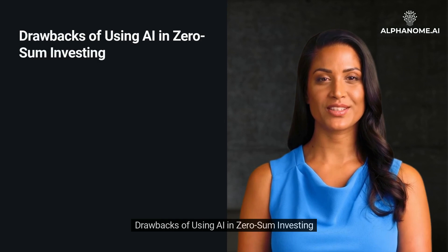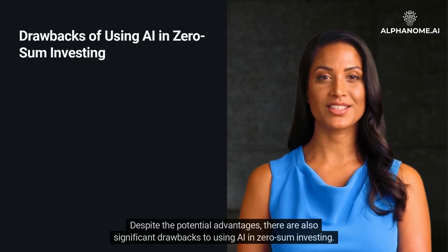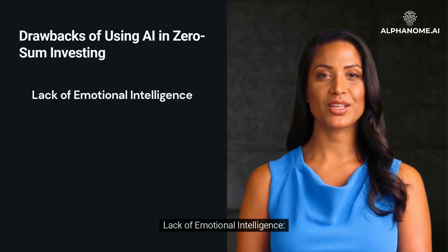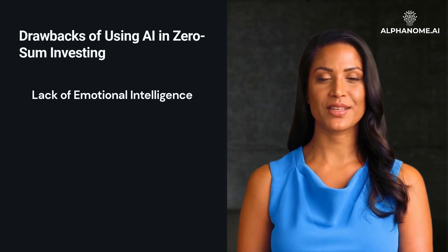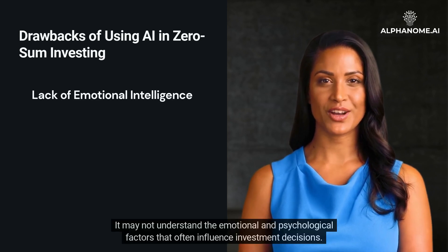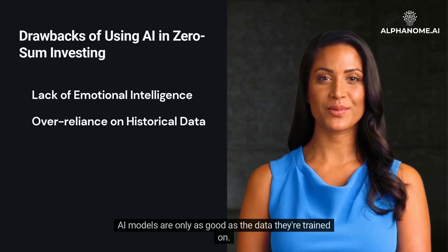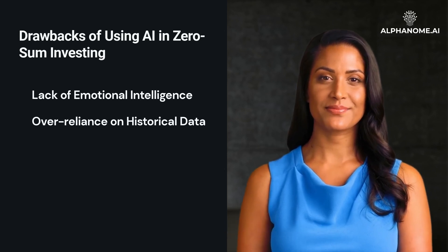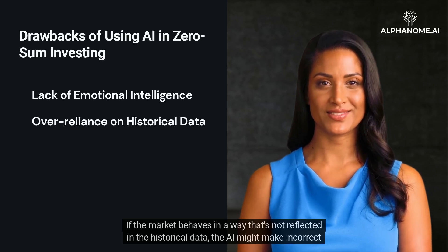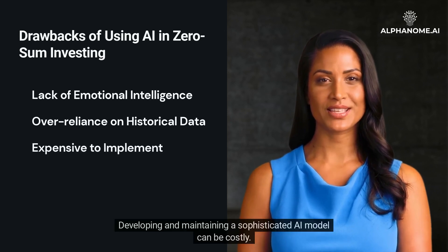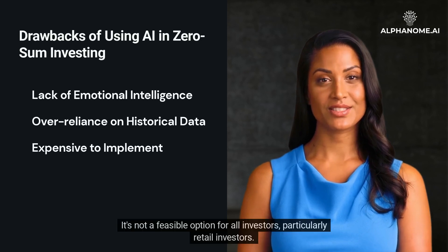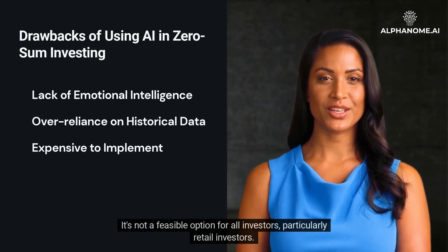Drawbacks of Using AI in Zero-Sum Investing. Despite the potential advantages, there are also significant drawbacks to using AI in zero-sum investing. Lack of Emotional Intelligence: while AI can analyze and learn from historical data, it lacks the human touch and may not understand the emotional and psychological factors that often influence investment decisions. Over-reliance on historical data: AI models are only as good as the data they're trained on — if the market behaves in a way not reflected in historical data, the AI might make incorrect predictions. Expensive to Implement: developing and maintaining a sophisticated AI model can be costly and is not a feasible option for all investors, particularly retail investors.